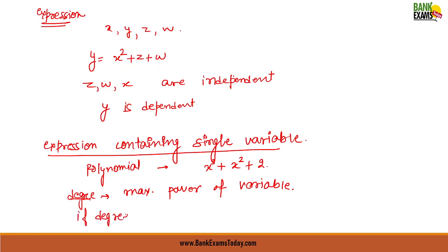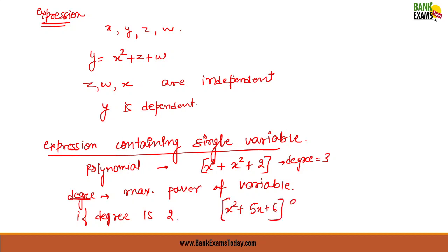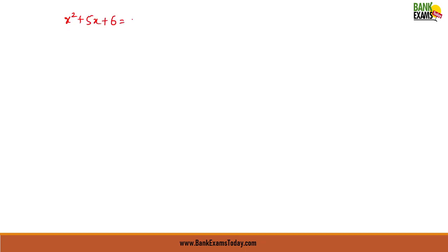If the degree of a polynomial is 2, it is called a quadratic polynomial. For example, in x cubed plus x squared plus 2, the degree is 3 because the highest power is 3. But if a polynomial of degree 2 is written — for example, x squared plus 5x plus 6 — this is a polynomial of degree 2, called a quadratic polynomial. Now if this quadratic polynomial is equated to zero, it is called a quadratic equation — so x squared plus 5x plus 6 equals zero is a quadratic equation.